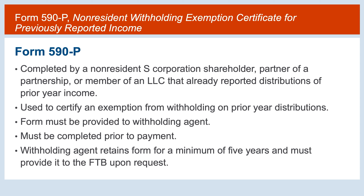The withholding agent retains this form for a minimum of 5 years and must provide it to FTB upon request. To clarify, withholding is not required on distributions of prior year California source income if the S corporation shareholder or partner provides the withholding agent a signed Form 590-P, certifying that they previously reported the income on the S corporation shareholder's or partner's California return.